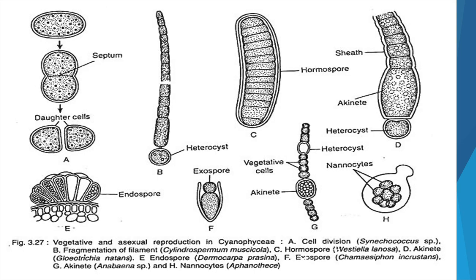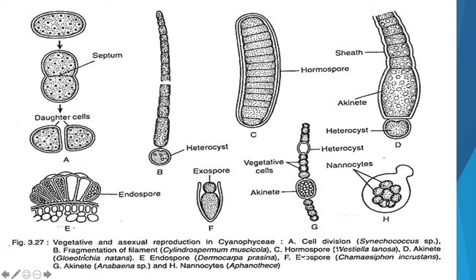These are the vegetative and asexual reproduction modes in Cyanophyceae. In Synechococcus species, you can see cell division — the cell is divided by a septum producing two daughter cells. In case B, fragmentation of the filament is shown — the fragment divides into two parts, each giving rise to a new thallus. This is an example of Cylindrospermum musicola. The next structure shows a hormospore in the case of Westiella lanosa.